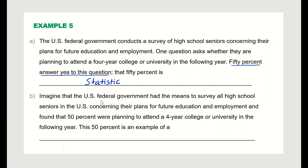Now imagine the government surveyed all high school seniors in the U.S. and found that 50 percent were planning to attend a four-year college or university. Since this 50 percent is related to the entire population of all high school seniors, this 50 percent is an example of a parameter.